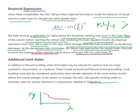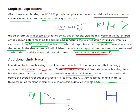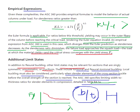In addition to flexural buckling, other limit states may be relevant for singly symmetric or unsymmetric sections, including torsional buckling and flexural-torsional buckling. Local buckling must also be considered, particularly when slender elements of the cross-section buckle before the overall strength of the section is reached. AISC 360 specifies the limiting width-to-thickness ratios for slender elements in compression, detailed in Table B4.1A.